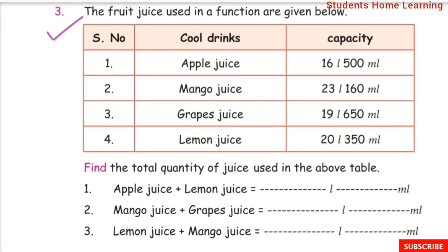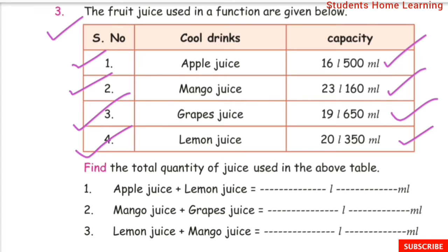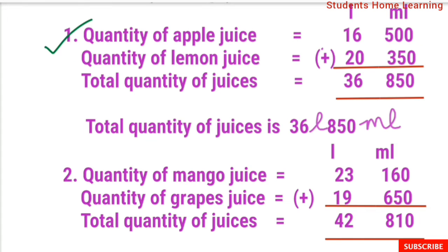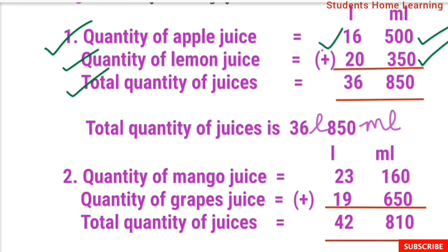Word problem 3: The fruit juice used in a function is given below. Apple juice: 16L 500ml, mango juice: 23L 160ml, grape juice: 19L 650ml, lemon juice: 20L 350ml. Find the total quantity of juice. First: apple juice plus lemon juice. Quantity of apple juice: 16L 500ml. Quantity of lemon juice: 20L 350ml. Adding: 0 plus 0 is 0, 0 plus 5 is 5, 5 plus 3 is 8, 6 plus 0 is 6, 1 plus 2 is 3. Total quantity is 36L 850ml.